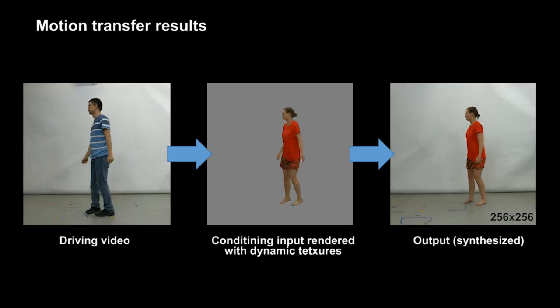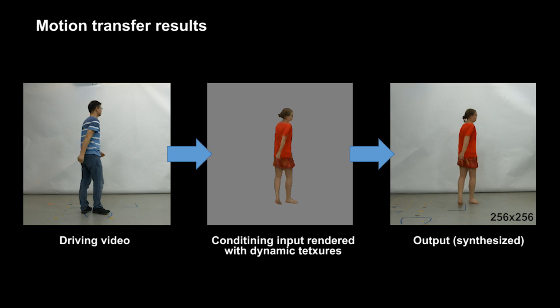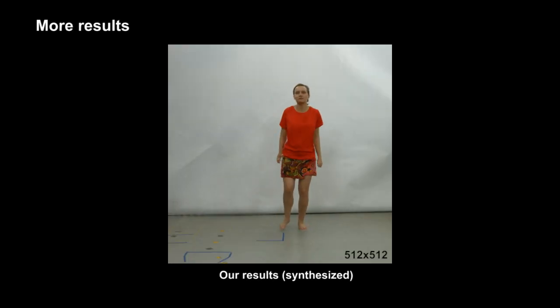Therefore, front, side and back views of the person look plausible. Our method generalizes well to various types of clothing, such as this skirt.